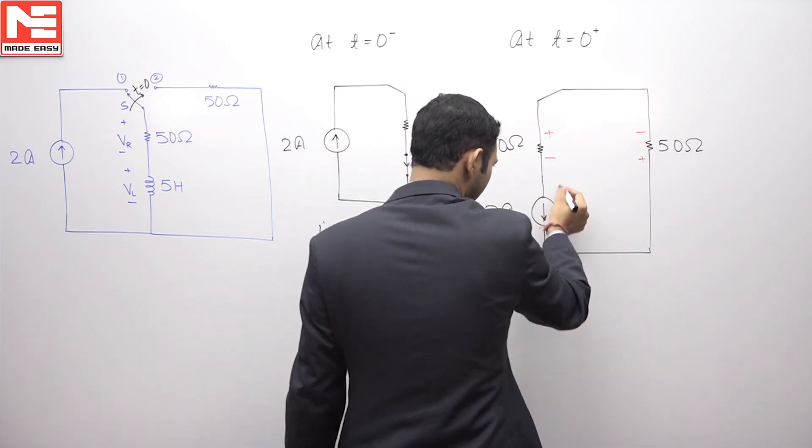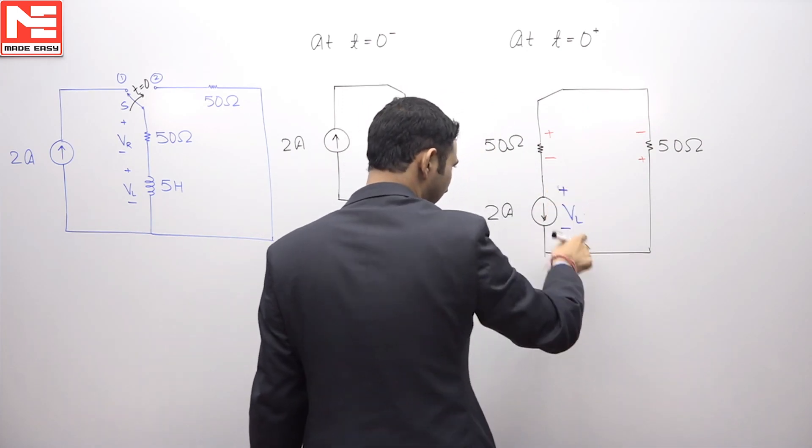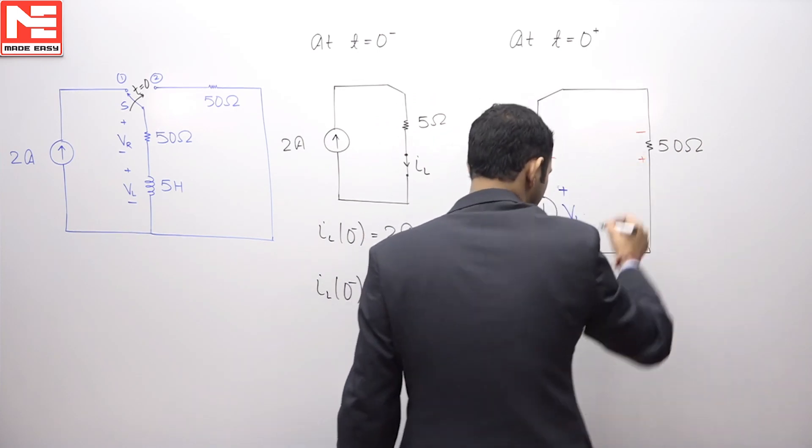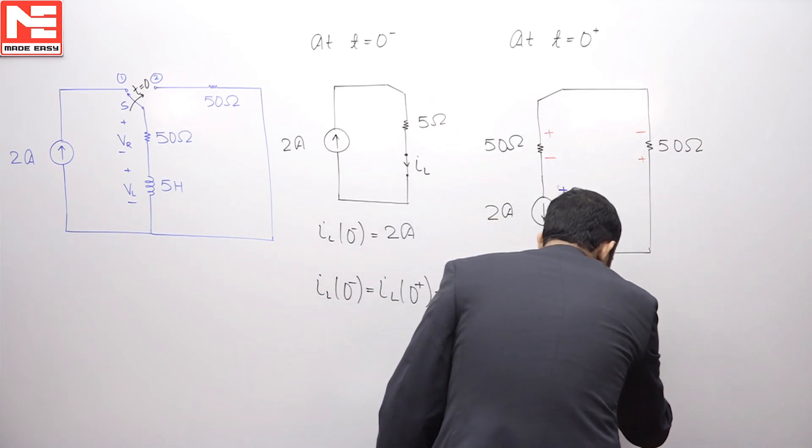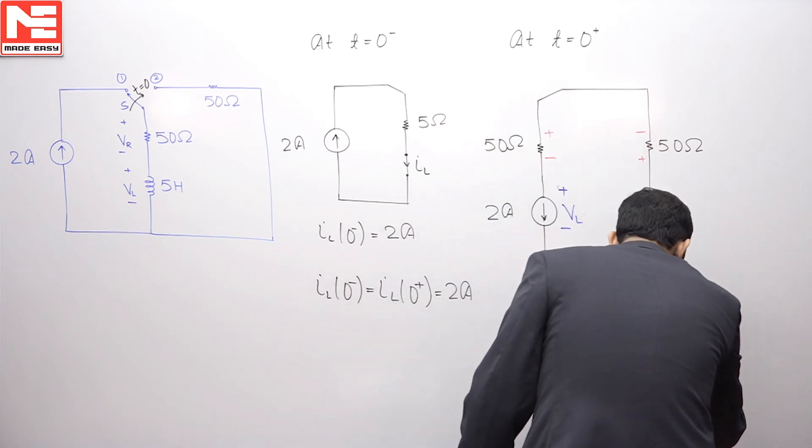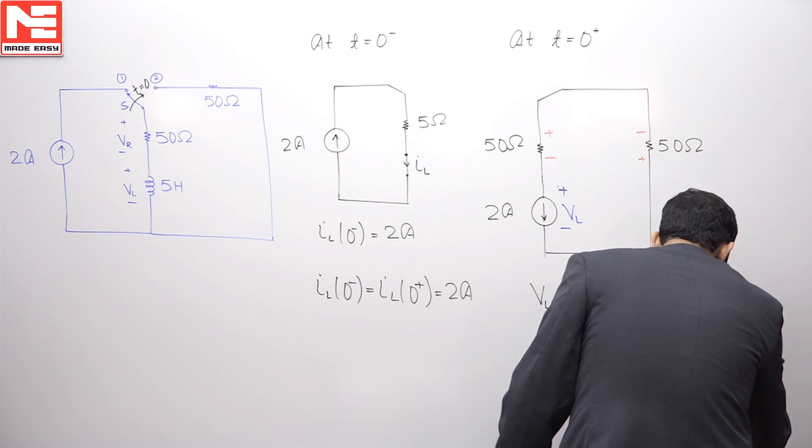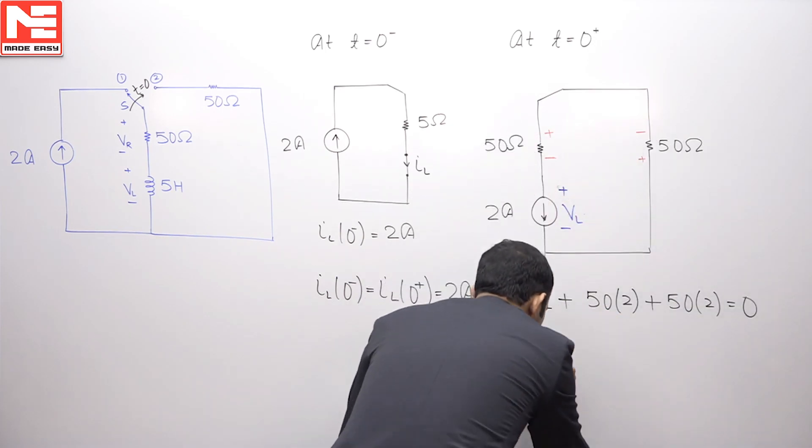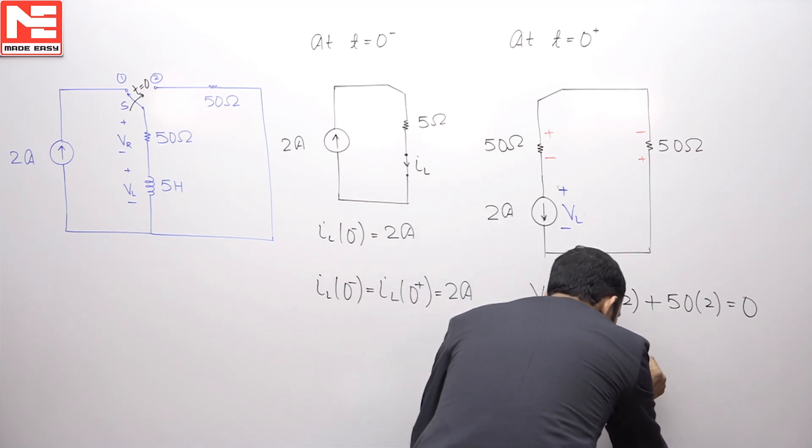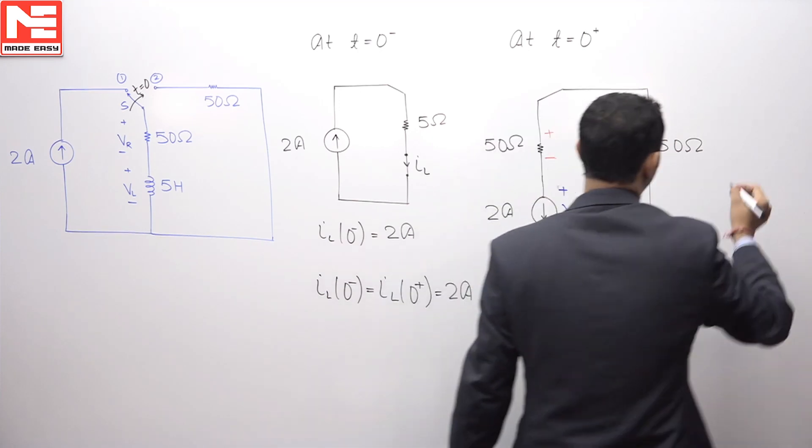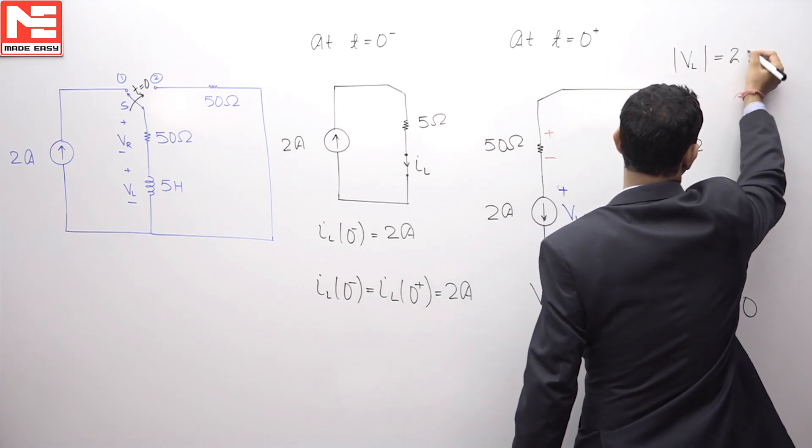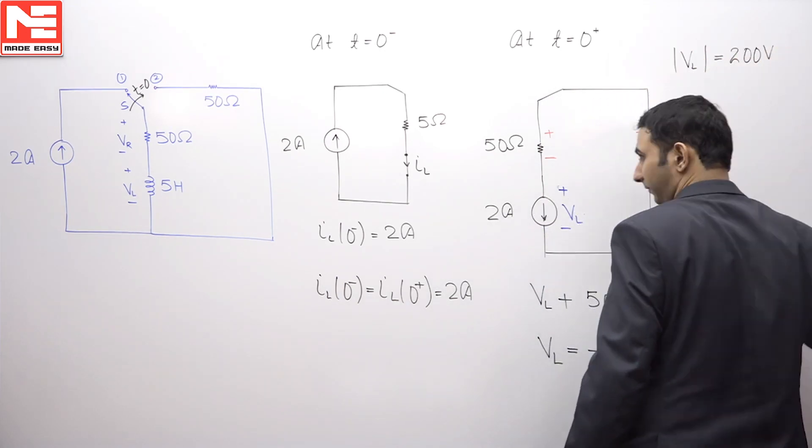Let us apply the KVL moving in this direction starting from here. It will be plus VL plus resistance multiplied by the current 2, then again plus resistance multiplied by the current 2, this is equal to 0. Or you can see from here, VL will be equal to 100 plus 100. On this side it will be minus 200. And as he has asked us to calculate the magnitude of the voltage, so it is coming as 200 volt.